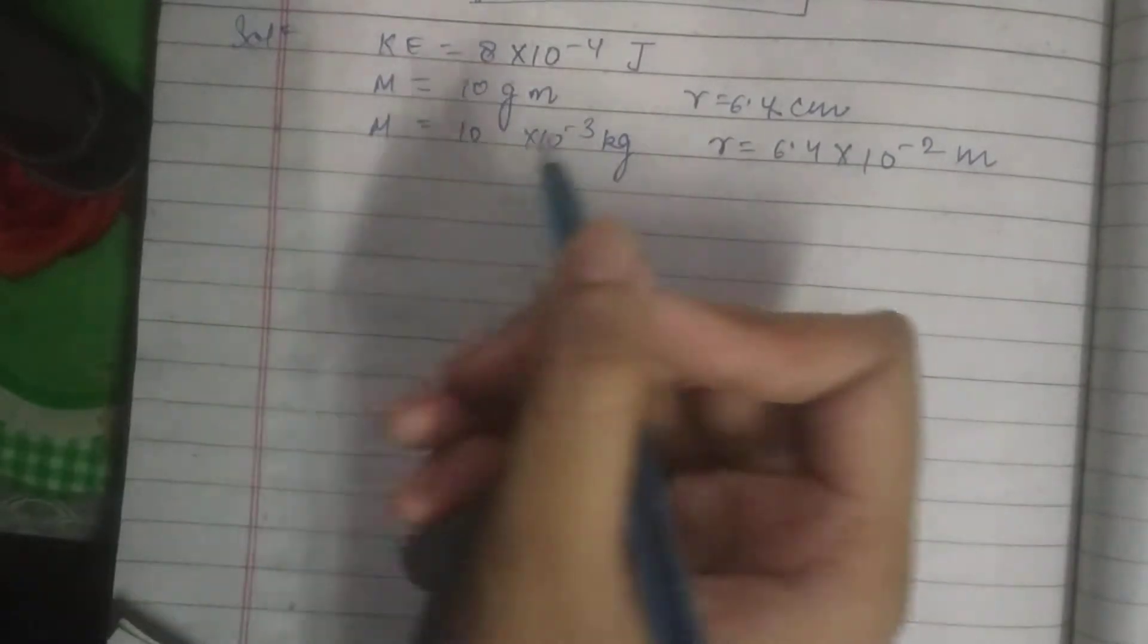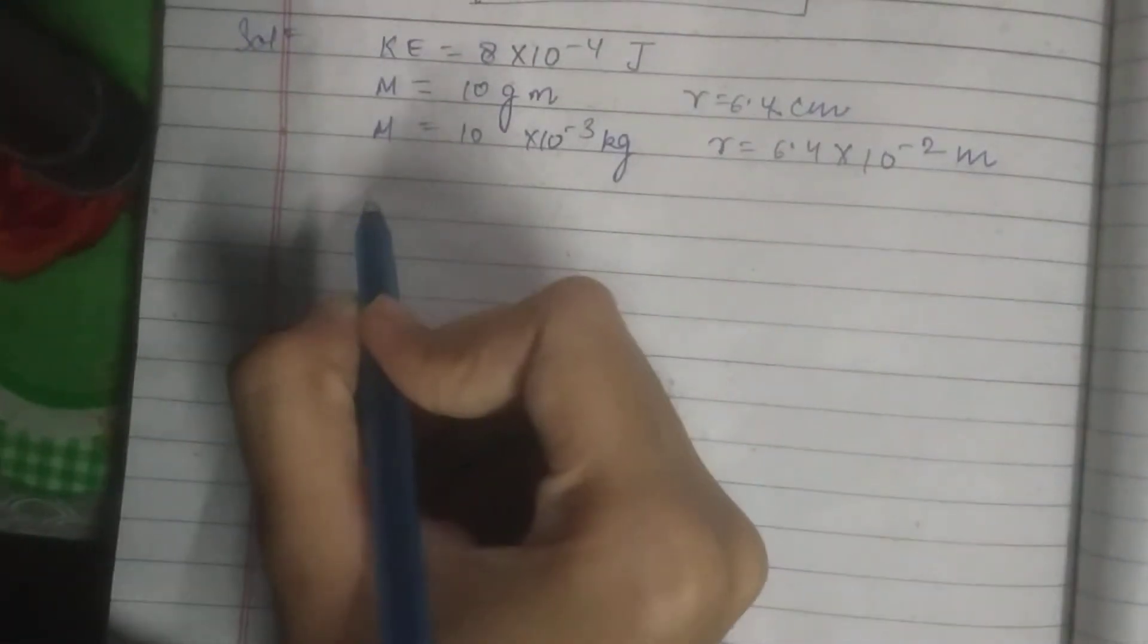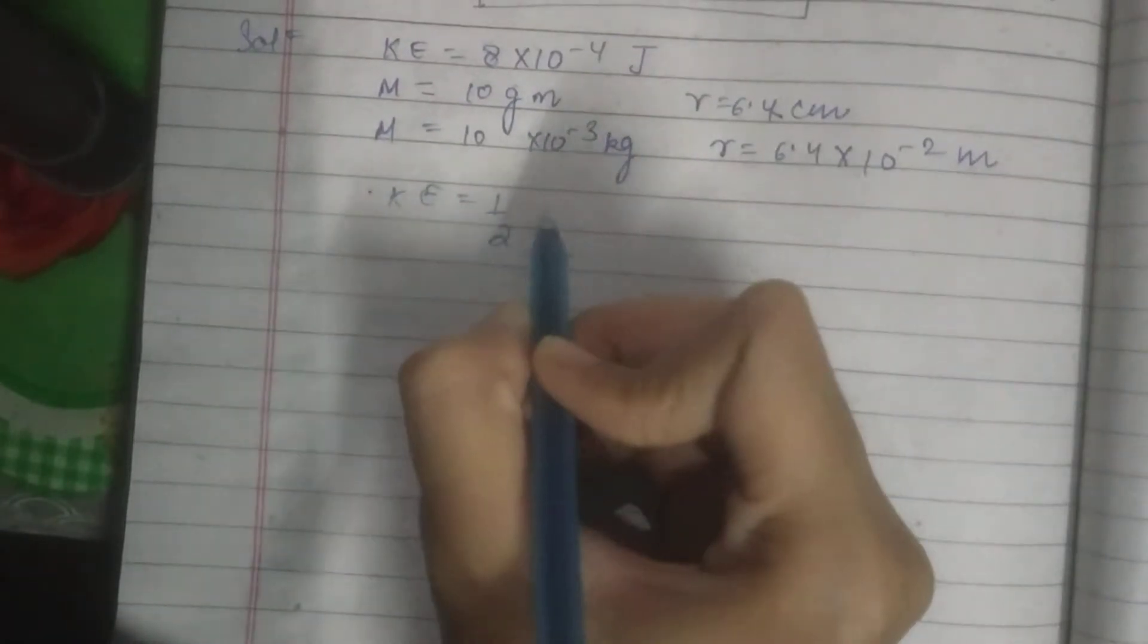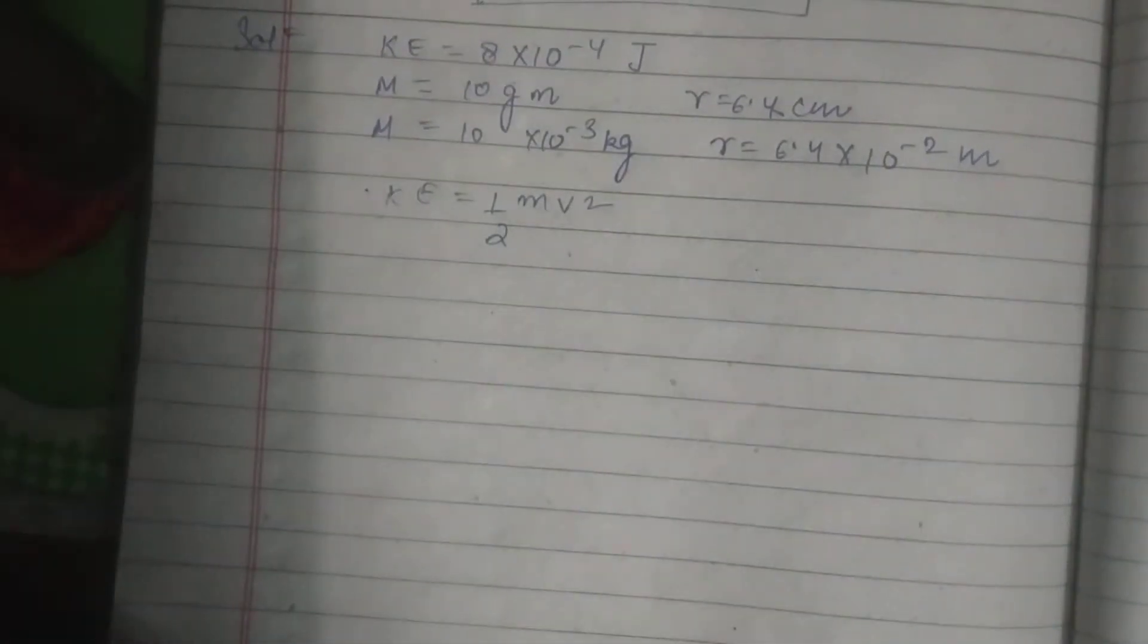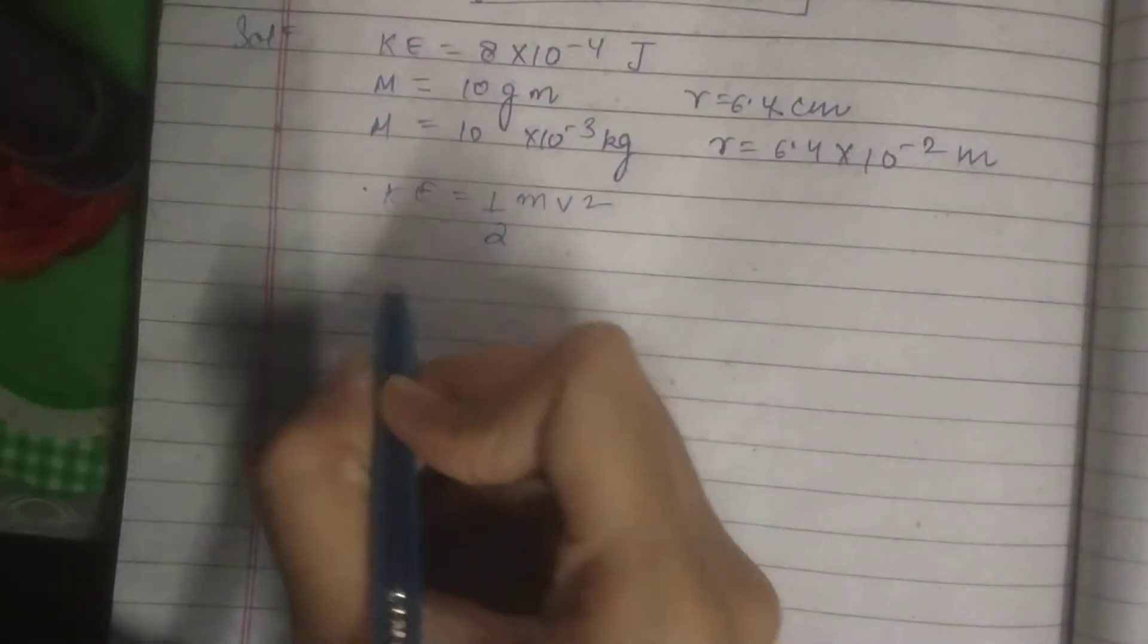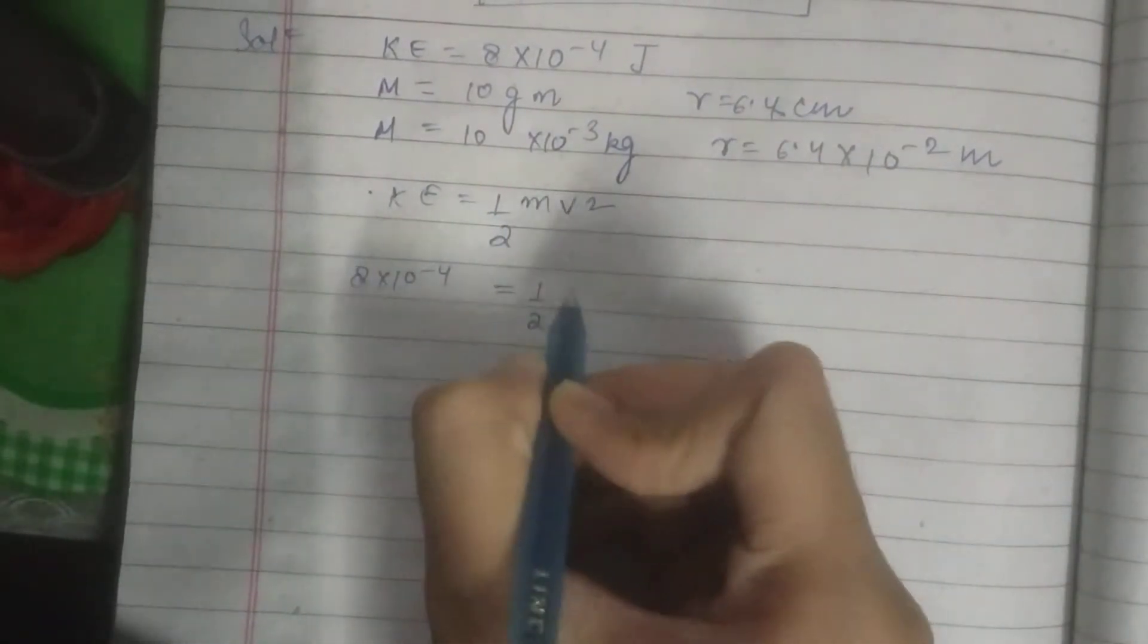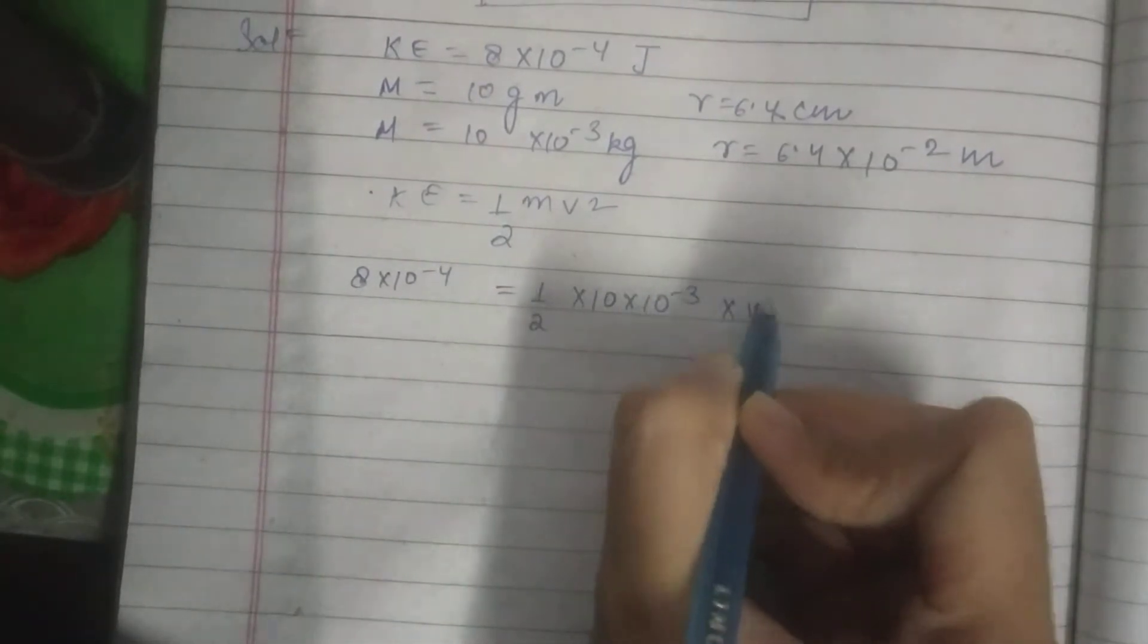Now we will solve the question. We know kinetic energy is equal to half mv square. So we will put the value: 8 into 10 to the power minus 4 is equal to half into 10 into 10 to the power minus 3 multiplied by v square.